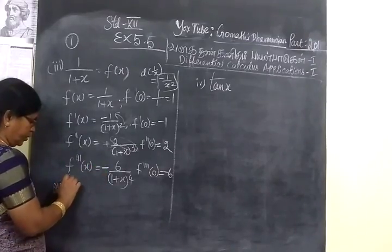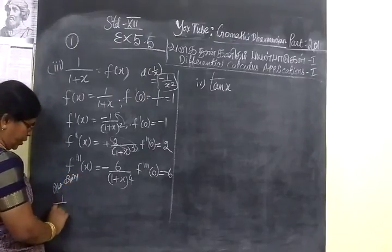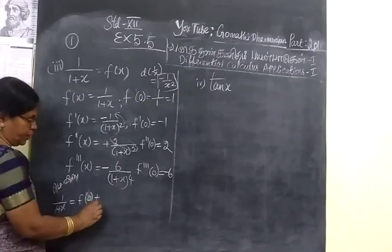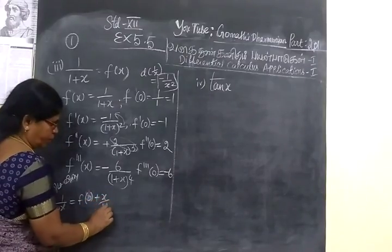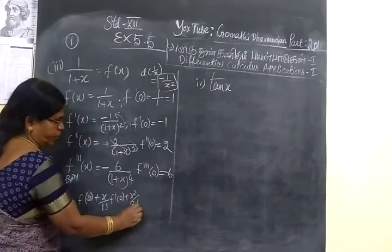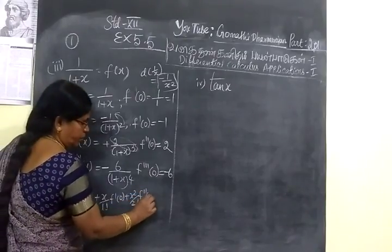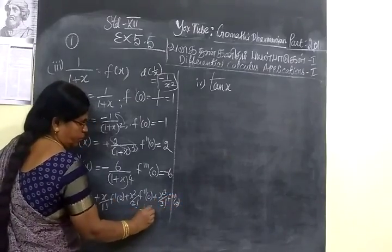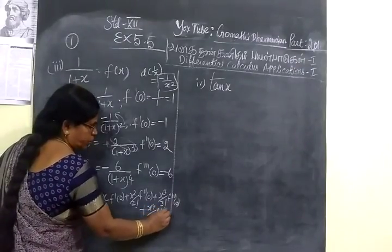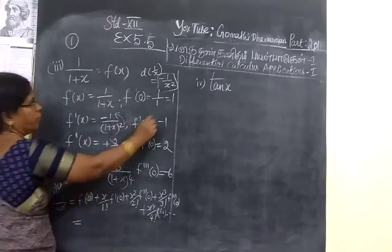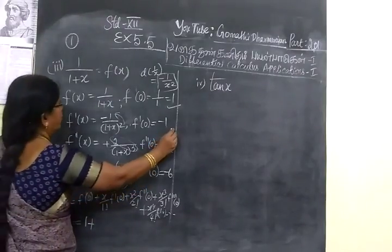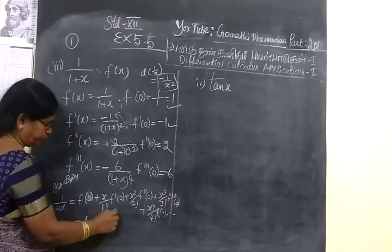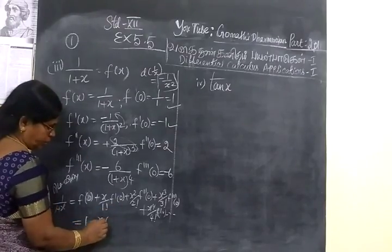So you can write Taylor series formula. 1 by 1 plus x is equal to f of 0 plus x by factorial 1, f dash of 0. Then x square by factorial 2, f double dash of 0 plus x cube by factorial 3, f triple dash of 0 plus x power 4 by factorial 4 and so on. So this is equal to f of 0. And this is 1 plus f dash of x minus 1. So minus x by factorial 1.